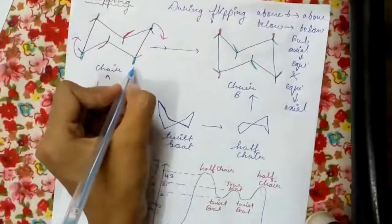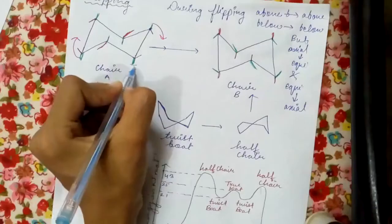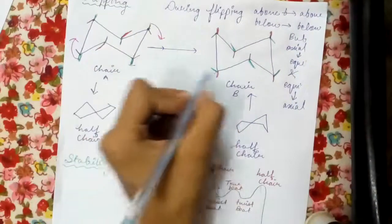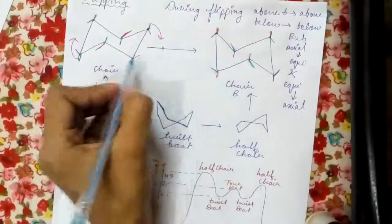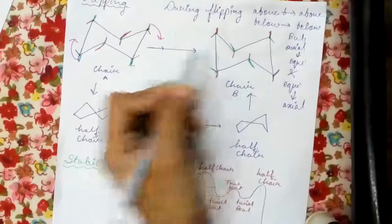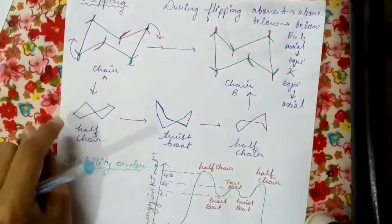See, as we have already seen, the green ones are our axial bonds. So after this, when we flip the ring, we get them in equatorial bonds. Similarly for equatorial bonds, if we see, they get to axial.